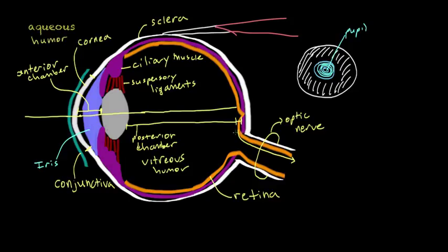The part of the eye where the optic nerve exits is known as the optic disc. Where the optic disc is, there are no photoreceptors. So if light were to hit this part of the eye, there would be no photoreceptors to transduce the light ray into an electrochemical impulse the brain can interpret — resulting in what's known as the blind spot. Everybody has a part of their visual field they're completely blind to, but for the most part it doesn't affect them because the brain can actually fill in what it thinks should be there.